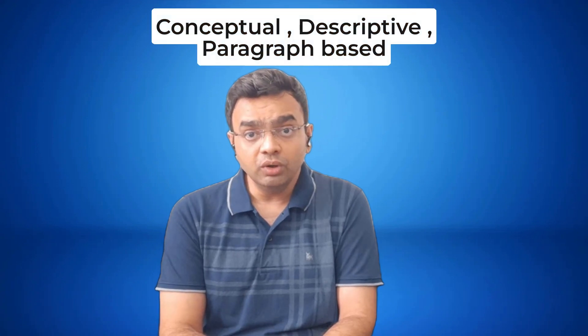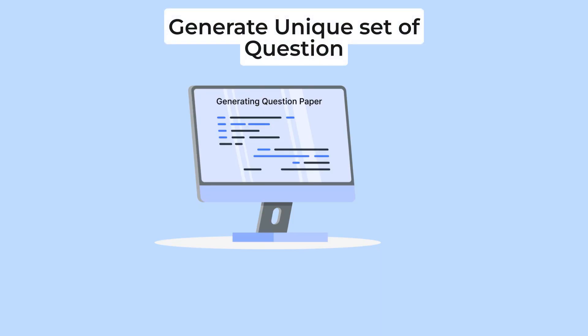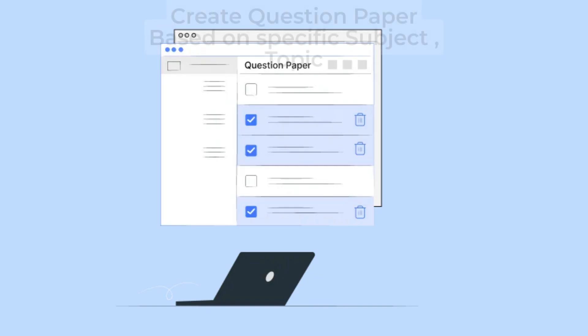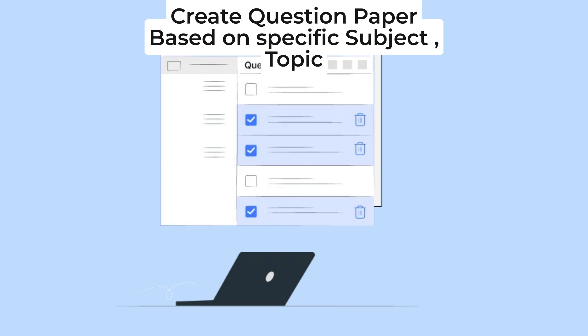You can request various types of questions to be generated, such as analytical, conceptual, descriptive, or paragraph-based questions. The system will generate a unique set of questions designed to assess whether students have grasped the concepts from each chapter. Additionally, you can ask the AI to create question papers based on a specific subject, topic, and difficulty level targeted at a particular student group.